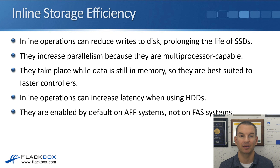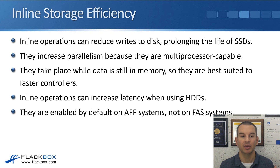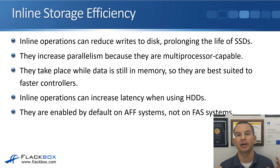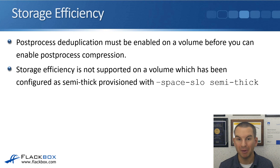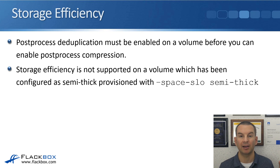Performance degradation is not such a likely problem on AFF systems, which are very fast, but it is something you need to test on FAS systems before you enable it. Because of this, inline storage efficiency is enabled by default on AFF systems. It's not enabled by default on FAS systems — you should test it there first. Post-process deduplication must be enabled on a volume before you can enable post-process compression. You'll see this in the GUI where you have to tick the checkbox for post-process deduplication before you can tick the checkbox for post-process compression.